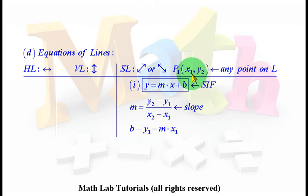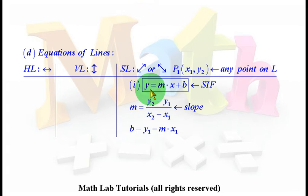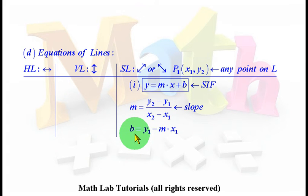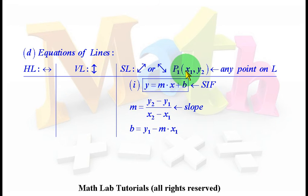If we have a point P1 with coordinates x1, y1, we can substitute x1 and y1 into the slope-intercept equation. Because P1 lies on the line, its coordinates satisfy the equation. Replacing y by y1 and x by x1 and solving for b, we get a formula for the y-intercept: b equals y1 minus m times x1. So you take y1, take the slope m, plug in x1, and that formula automatically gives you the value of the y-intercept.